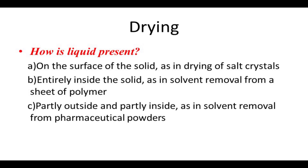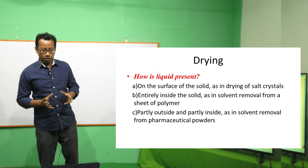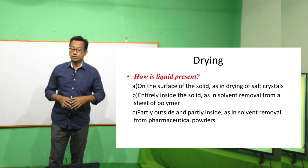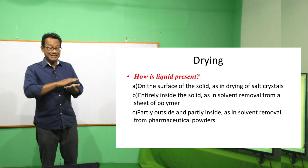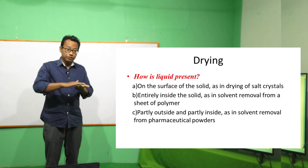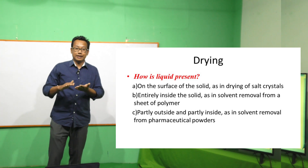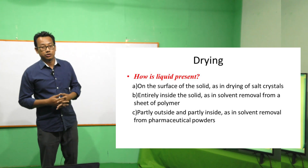Another important thing is that drying happens only when the humidity of the drying environment is less saturated with moisture. So the second point is that drying is mainly about the removal of water. How is water or any other liquid incorporated in a solid system? There are three ways in which liquid is incorporated in a solid. The first one is at the surface of the solid, as in the case of salt crystals.